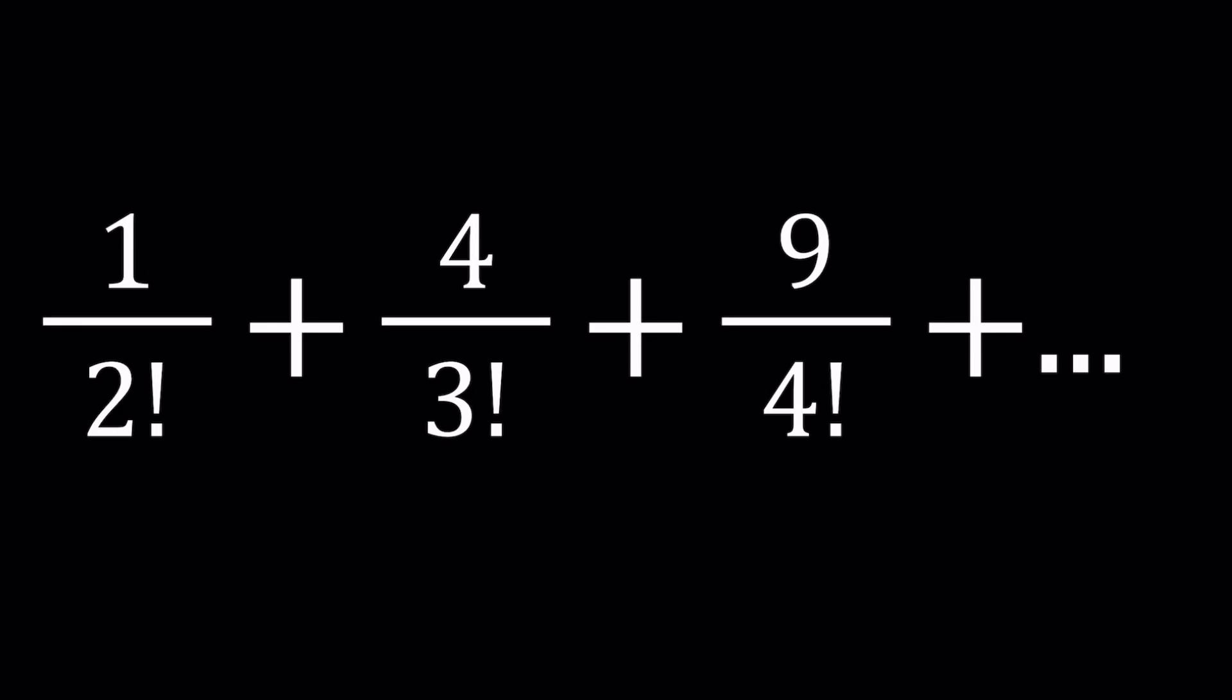Hello everyone. In this video, we're going to be solving a problem, an infinite sum with factorials, or maybe reciprocals of factorials. So we have 1 over 2 factorial plus 4 over 3 factorial plus 9 over 4 factorial and then 16 over 5 factorial, where we have perfect squares in the numerator and consecutive factorials starting with 2 factorial in the denominator. That's what our sum looks like and we're going to evaluate this infinite sum.